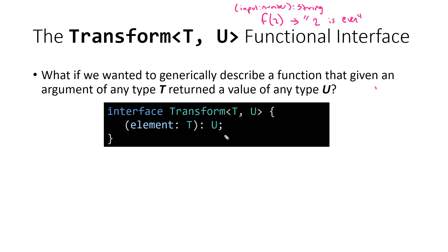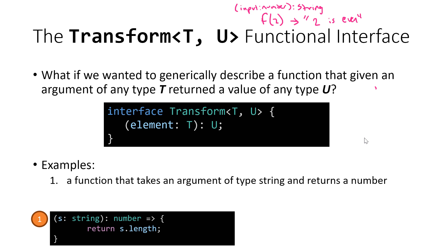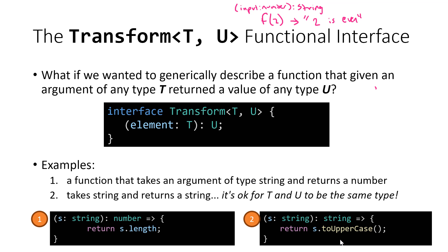This is more flexible than when we use two T's, because those T's for any given use need to be the same type placeholder. But T and U can be anything — they can even be the same. So T and U could be the same if we wanted a function that takes in a number and returns a number. For example, one function takes a string and returns a number — the length of that string. Another example: give it a string and just convert it to uppercase, so T and U are both string. This transform interface with generic types T and U gives us the flexibility to choose whether T and U are the same or different.